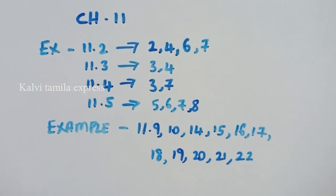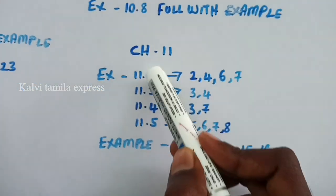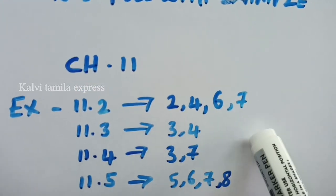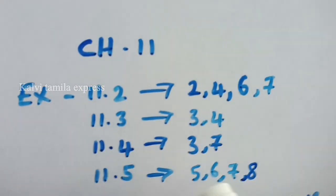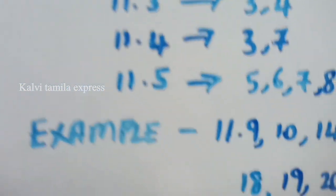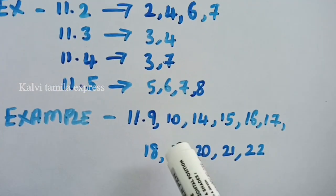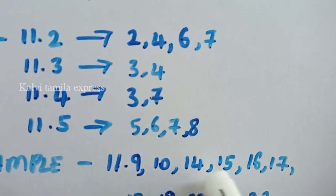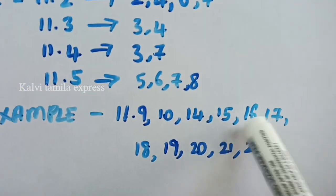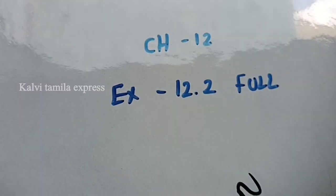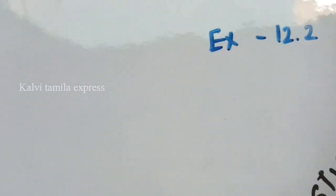So, chapter 11: exercise 11.2 questions 2, 4, 6, 7; 11.3 questions 3, 4; 11.4 questions 3, 7; 11.5 questions 5, 6, 7, 8. And the next one is example sums — some extra but it is easy — 11.9, 10, 14, 15, 16, 17, 18, 19, 20, 21, 22. So, chapter 12: 12.2 full on this — you can see 12.2.